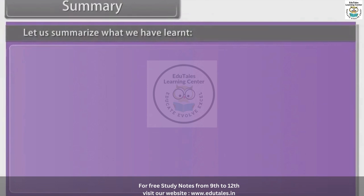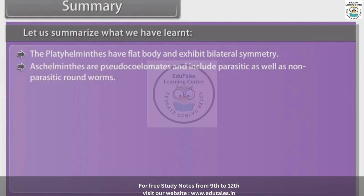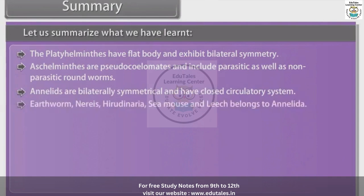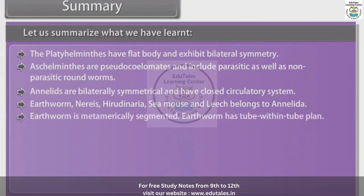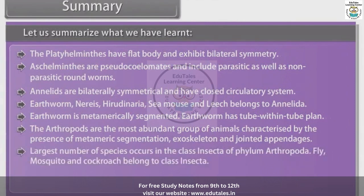Let us summarize what we have learned. Platyhelminthes have a flat body and exhibit bilateral symmetry. Aschelminthes are pseudocoelomates and include parasitic as well as non-parasitic roundworms. Annelids are bilaterally symmetrical and have a closed circulatory system. Earthworm (Pheretima), Hirudinaria (leech) and sea mouse belong to Annelida; the earthworm is metamerically segmented and has a tube-within-tube body plan. Arthropods are the most abundant group of animals, characterized by metameric segmentation, exoskeleton and jointed appendages; the largest number of species occurs in the class Insecta of Phylum Arthropoda.